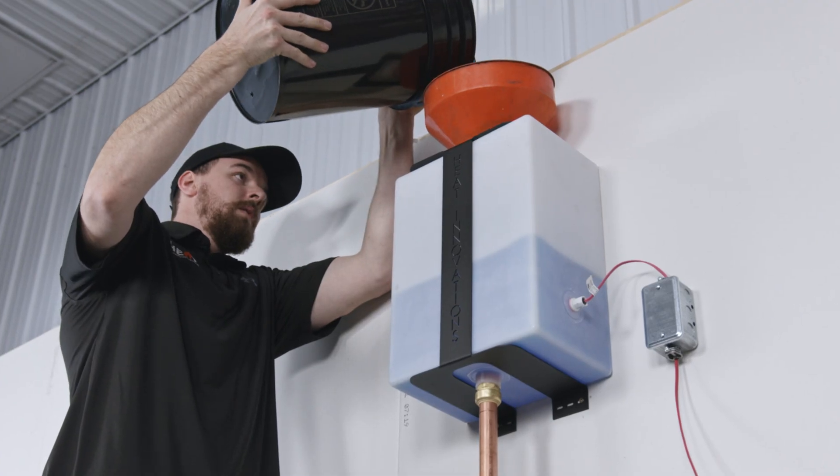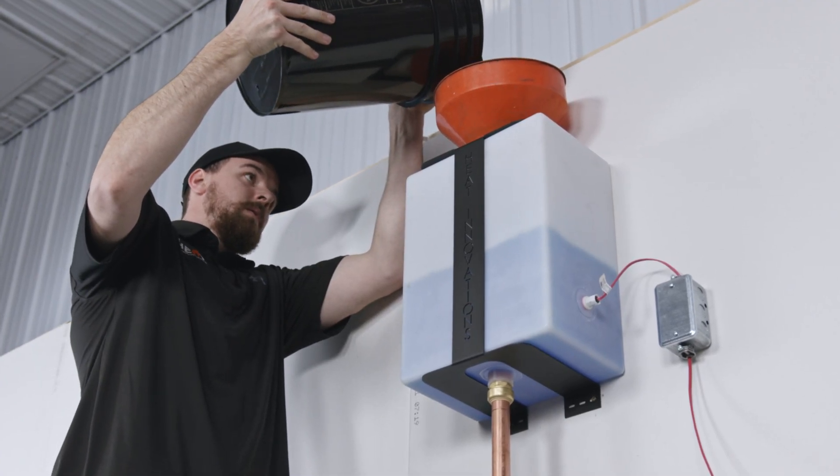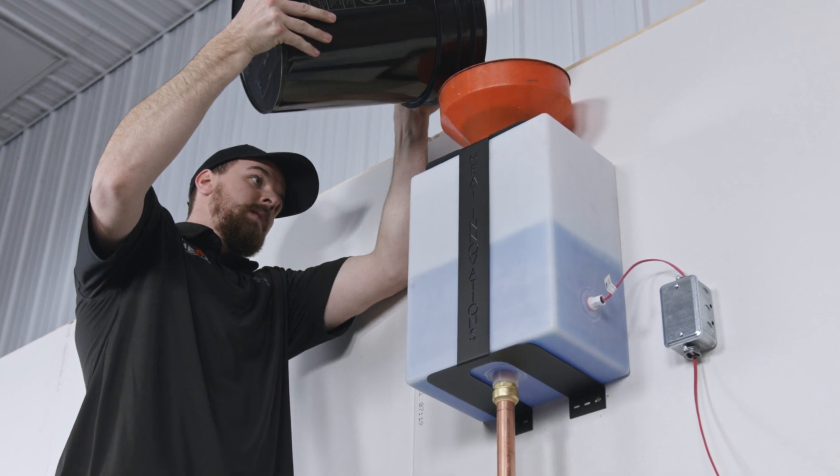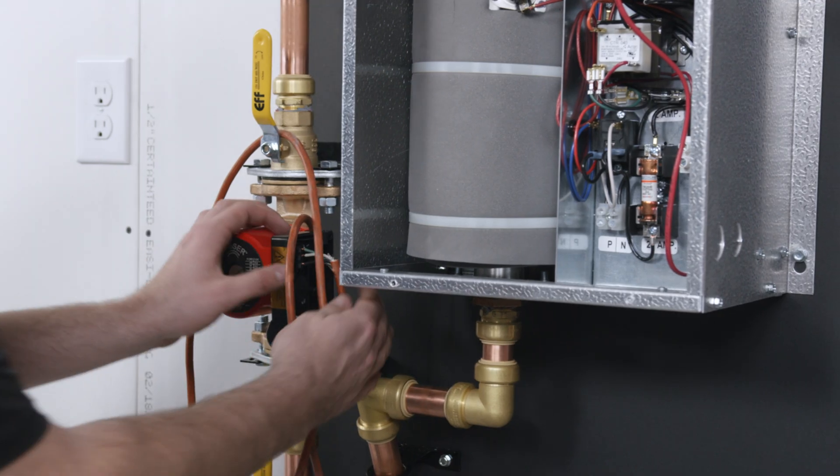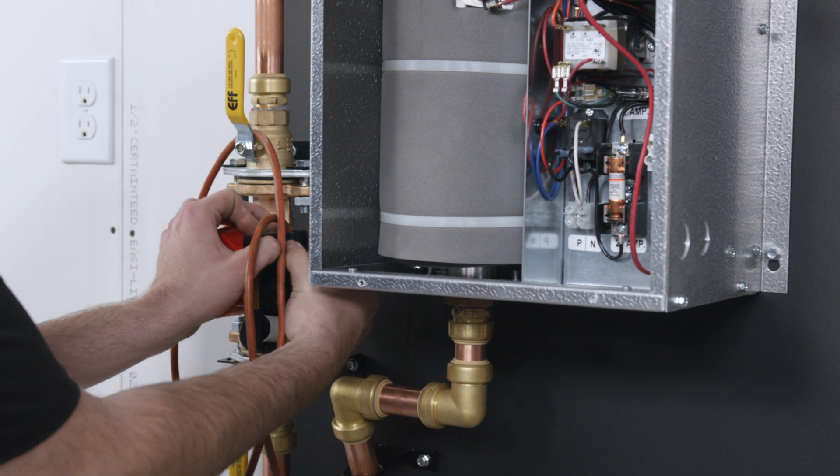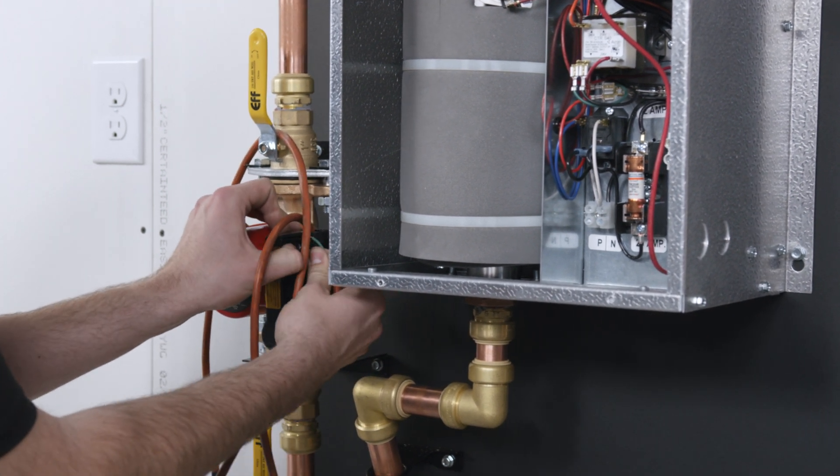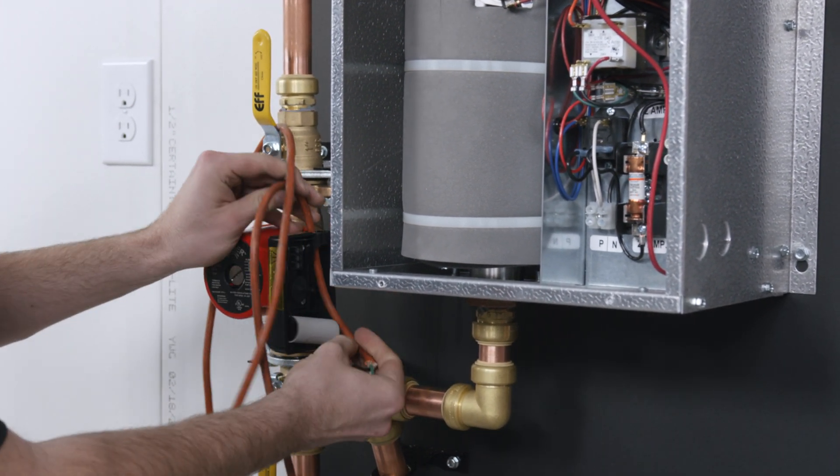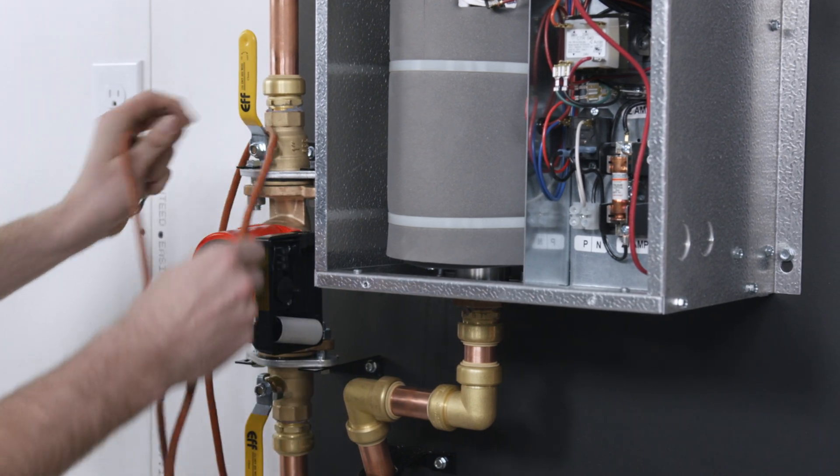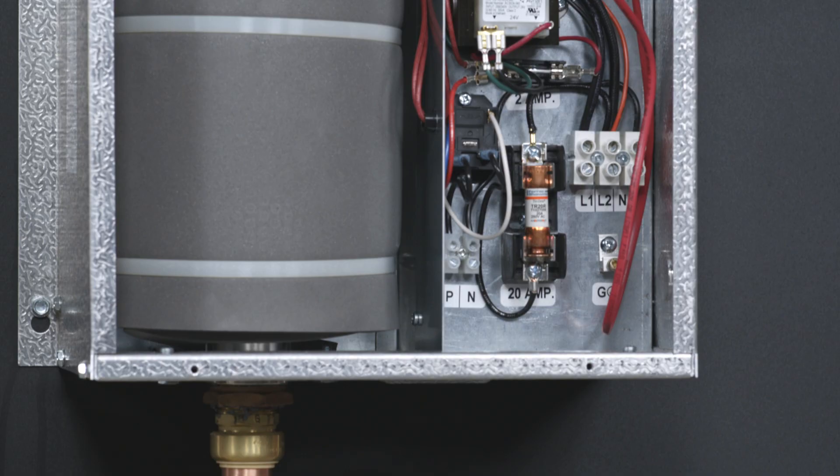After the system is purged of air, you may need to top up the expansion tank with more water and glycol. Call your electrician to disconnect the temporary wire on the pump and connect it inside the boiler to the P and N terminals.